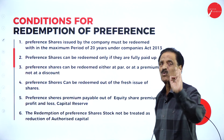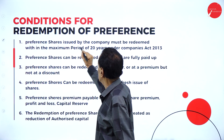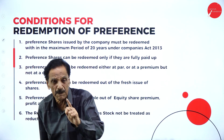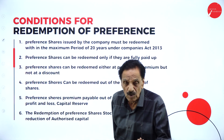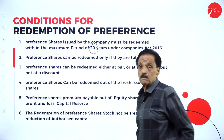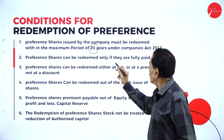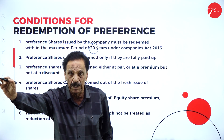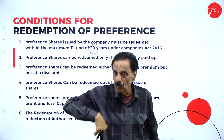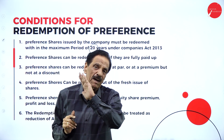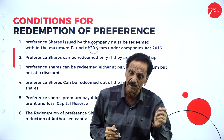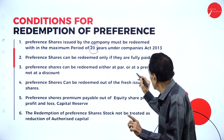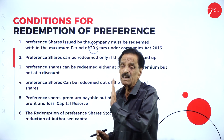The conditions for redemption of preference shares are as follows. First, preference shares issued by the company must be redeemed within a maximum period of 20 years. Second, preference shares can be redeemed only if they are fully paid up. Partly paid preference shares cannot be redeemed. For example, if the share value is 100 and only 80 has been paid, ask the shareholder to pay the balance of 20 first, then redeem.